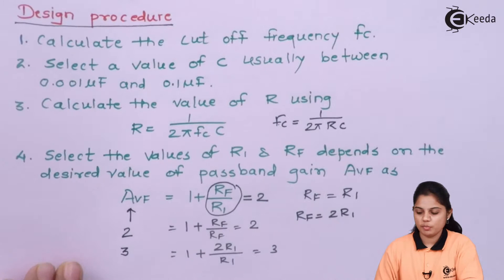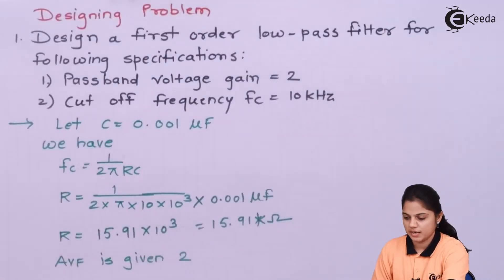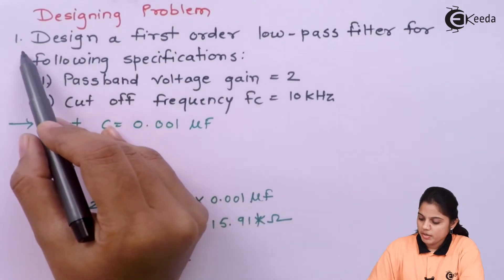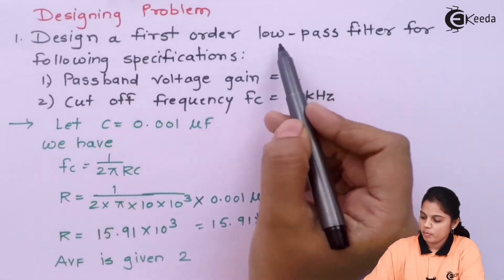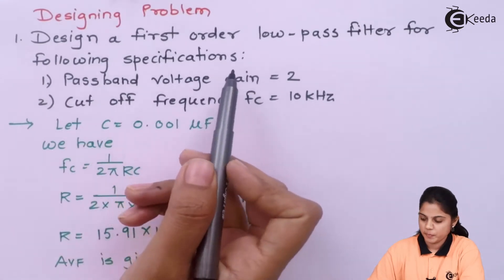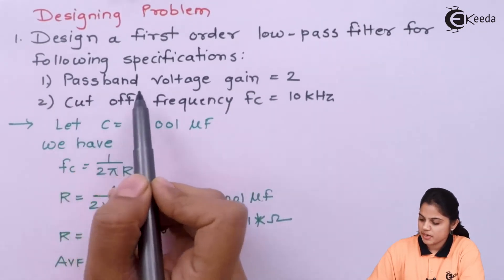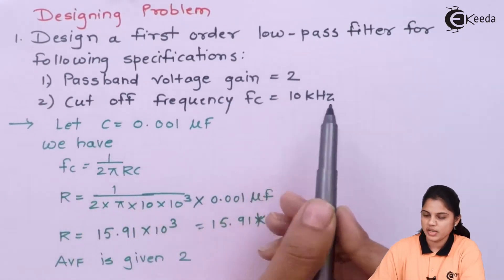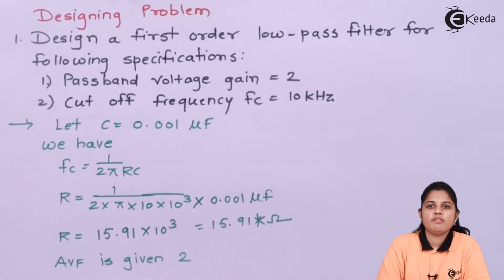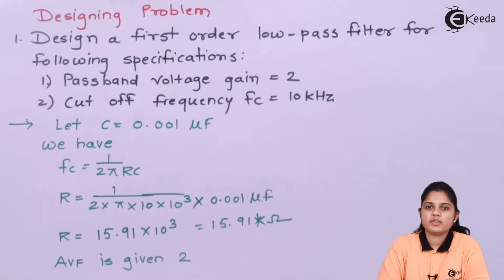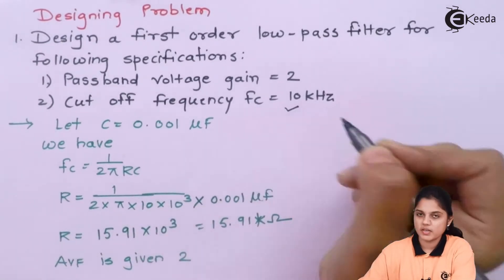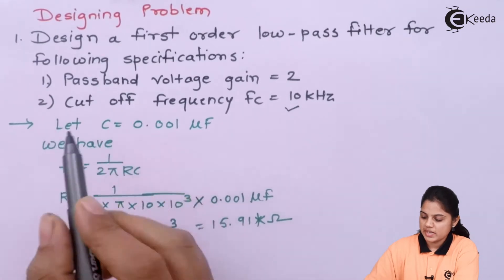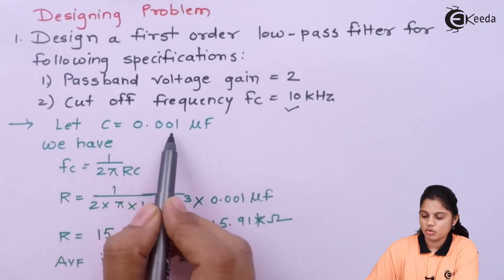Now, based on this procedure, we will solve a problem on low-pass filter design. The problem is: design a first-order low-pass filter for the following specifications — passband voltage gain AVF = 2, and cut-off frequency FC = 10 kHz. Since cut-off frequency is given, we need to find the resistance. We can assume the capacitor value, so let's assume C = 0.01 microfarad.